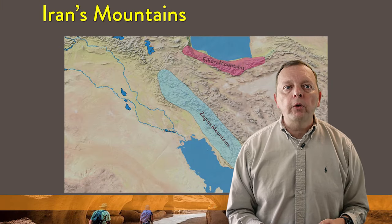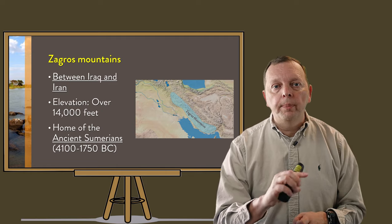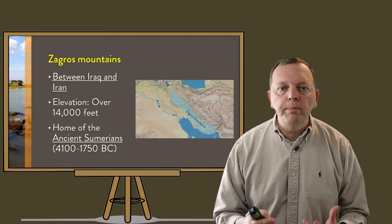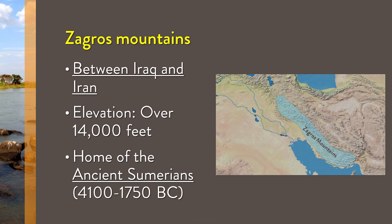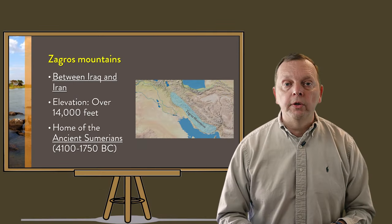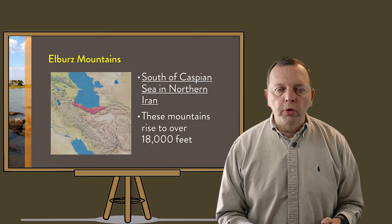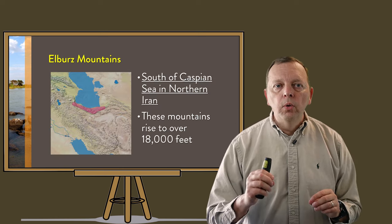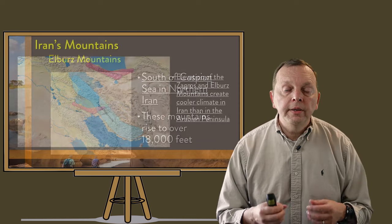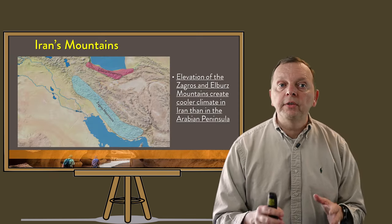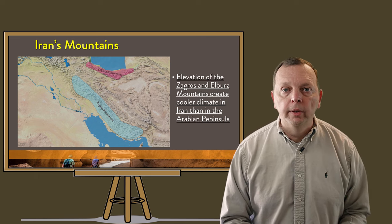Two other major mountain ranges are both in Iran. Between Iran and Iraq, stretching up to Turkey, are the Zagros Mountains, which reach up to 14,000 feet — and it was within the Zagros Mountains that the ancient Sumerian civilization made their home. The second range is the Elburz Mountains, lying to the south of the Caspian Sea in northern Iran, climbing to over 18,000 feet. Together, the Zagros and Elburz Mountains give Iran an overall cooler climate than the rest of the Middle East.